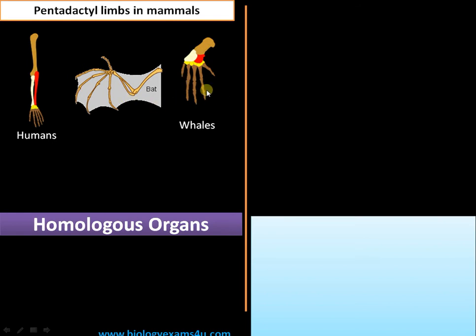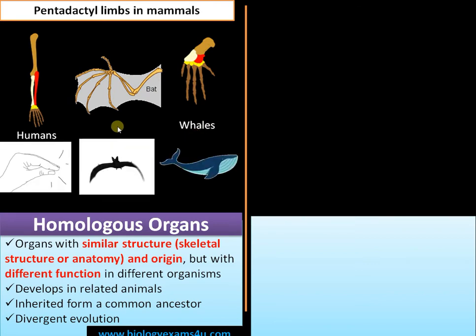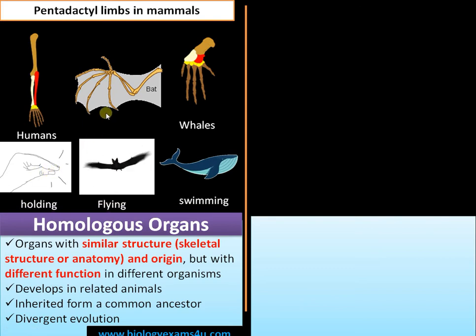In whales also the structure is the same. Homologous organs are organs which have the same structure but with different function. They are also similar in origin but with different function in different organisms. In humans, our hands are used for grasping and holding, whereas in bats it is for flying, whereas in whales it is for swimming.